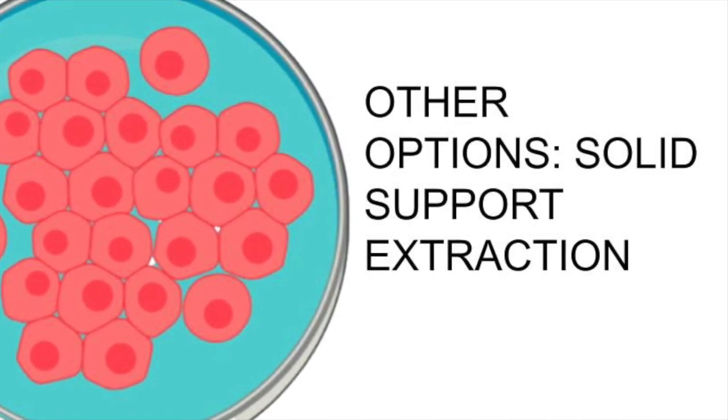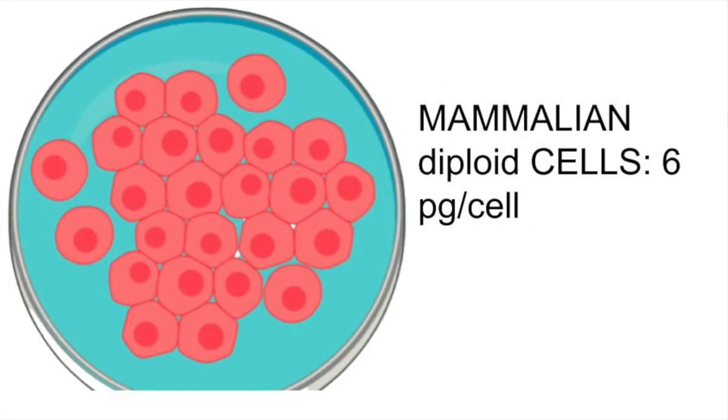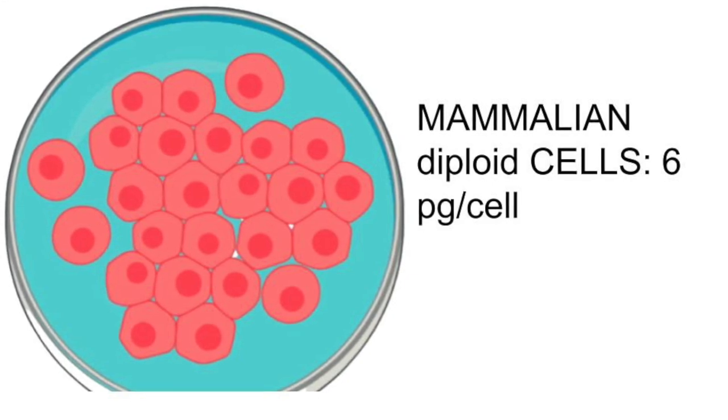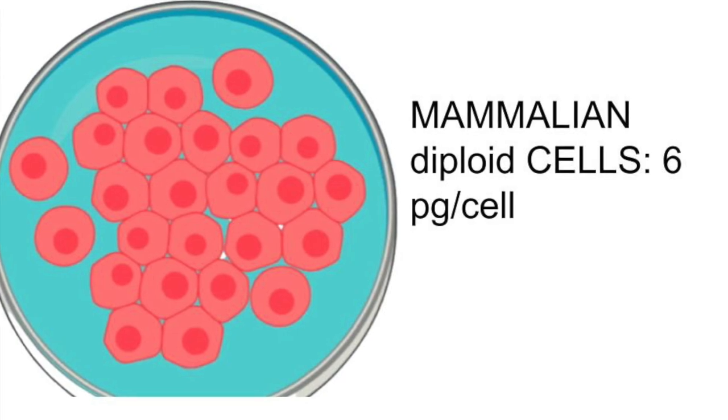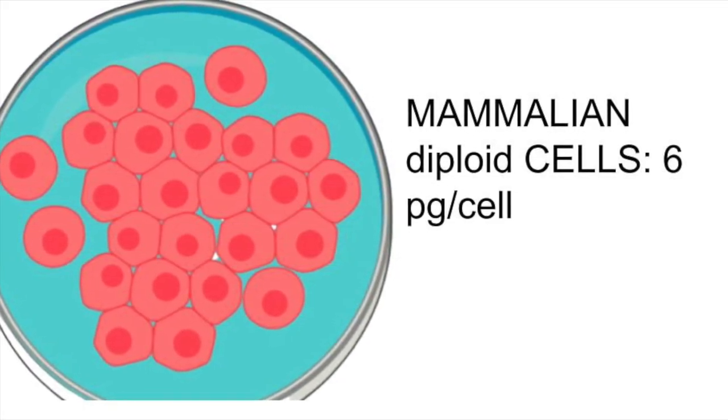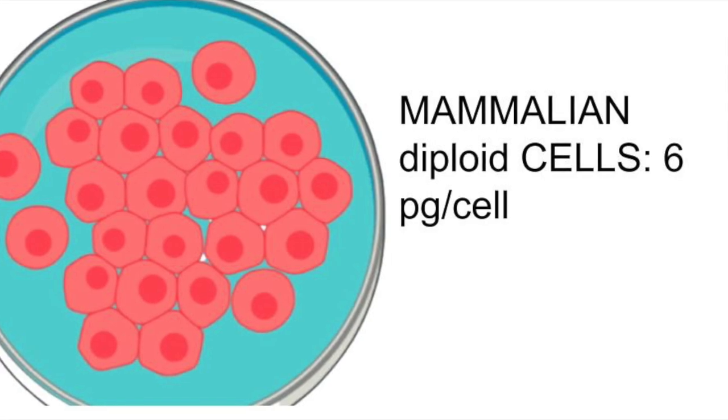So how much can you recover from cells? Cells are regular cells that are diploid, which means they have chromosomes from both mom and dad. Each diploid cell in a typical mammalian cell contains six picograms of DNA.